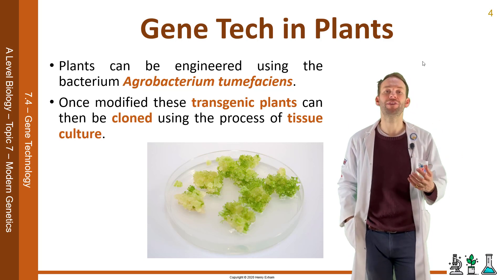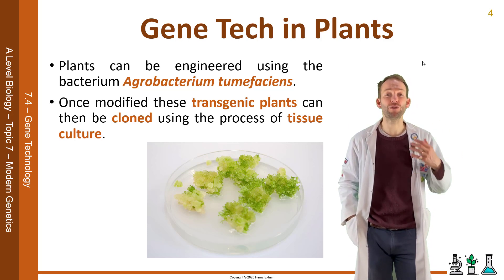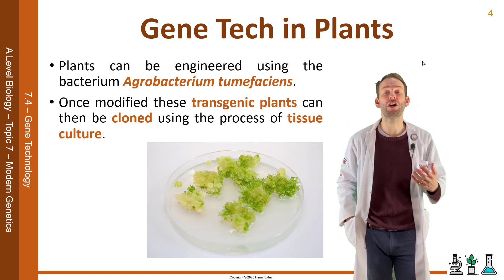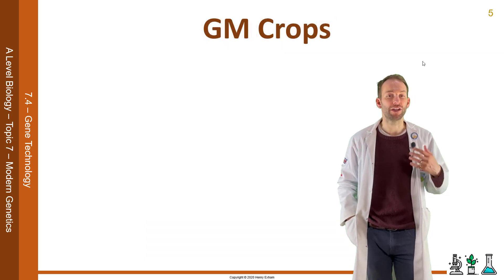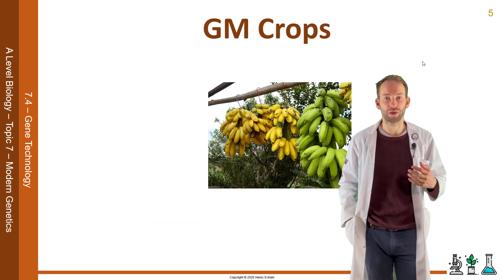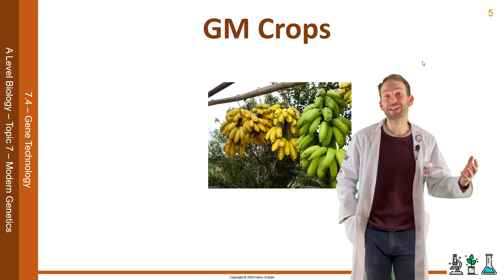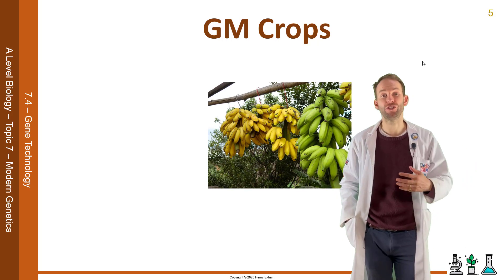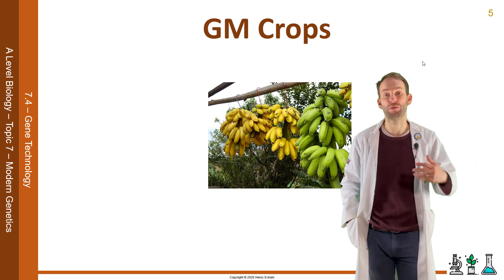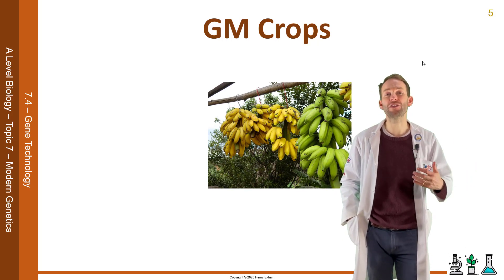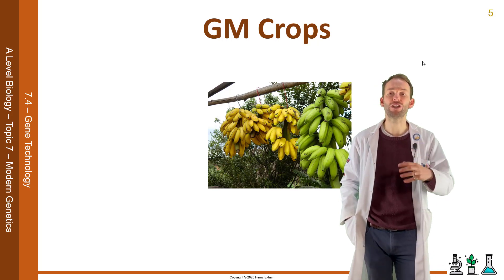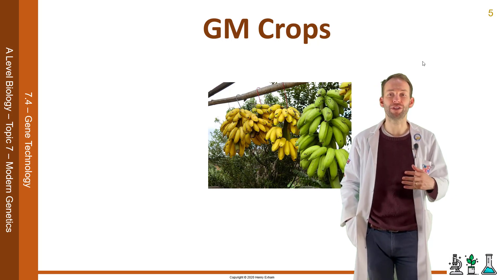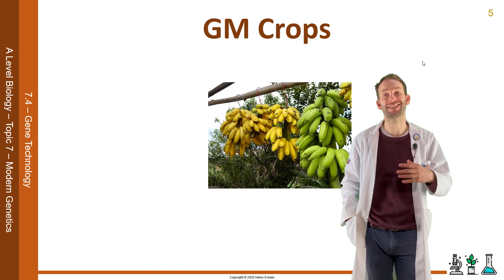GM crops are common around the world now. In the US, more than half the maize, cotton and soy crops are GM, and they are very common in China and India as well. Some modifications are for the producer to get a more profitable, reliable yield, and others benefit the consumer, such as improving nutritional content. For example, there are GM bananas which are resistant to diseases.